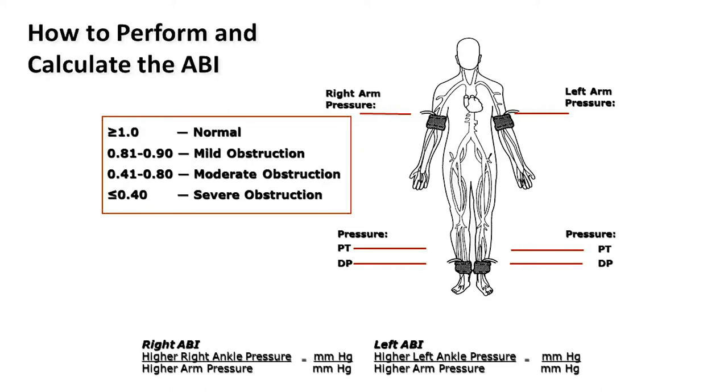The ABI is calculated by checking the arm pressure — using whichever arm is highest — and the leg pressure — using whichever is highest — and dividing the numbers. A value between 1.0 and 1.4 is normal. Severe obstruction is anything less than 0.4. Mild to moderate obstruction falls in between. For mild to moderate values, we typically prescribe an exercise regimen to see if claudication symptoms improve rather than proceeding directly to intervention.